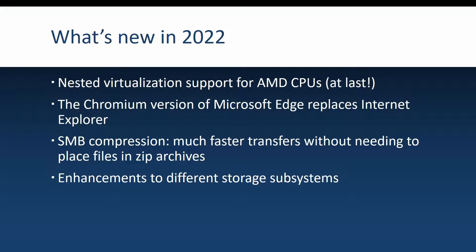One feature that has been a long time coming, especially for people with test labs at home, is support for nested virtualization on AMD CPUs. Since AMD CPUs are cheaper and have more cores than Intel CPUs, this is a very welcomed addition. Windows Server 2022 also ditches Internet Explorer and replaces it with Microsoft Edge, which is also a welcome change. It now has SMB compression, allowing faster file transfers without needing to zip files first — supported when both server and client support SMB compression. There have also been enhancements to various storage subsystems.